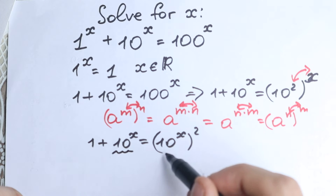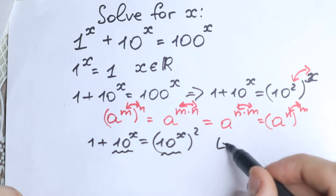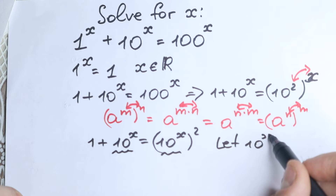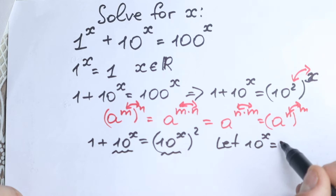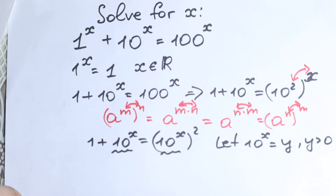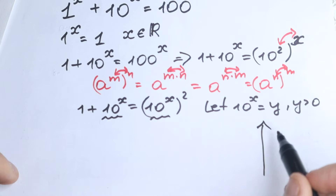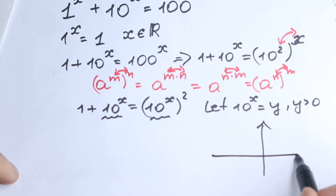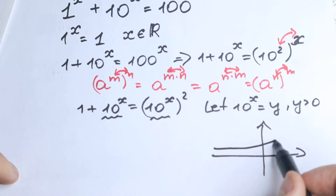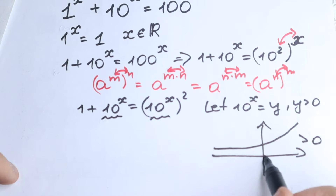Now, we have 10 to the x appearing twice — let's write a substitution. Let 10 to the power x equal y, and of course y must be positive. This is a really important moment because, as we know, the exponential function is an increasing function in our case and is always positive — always greater than 0.